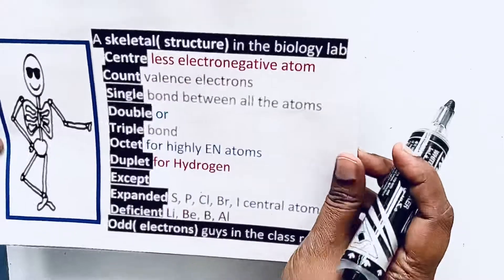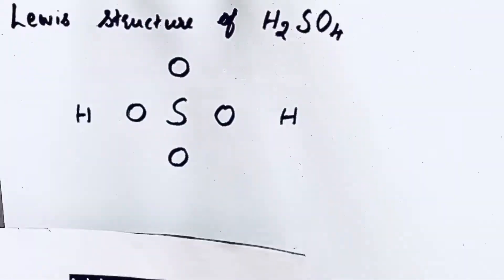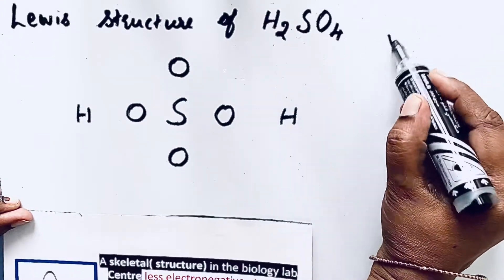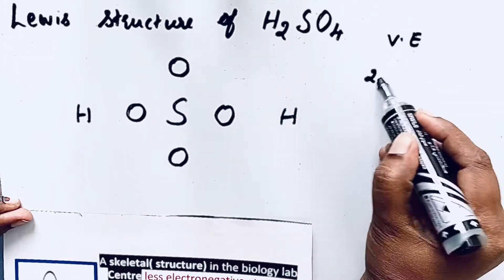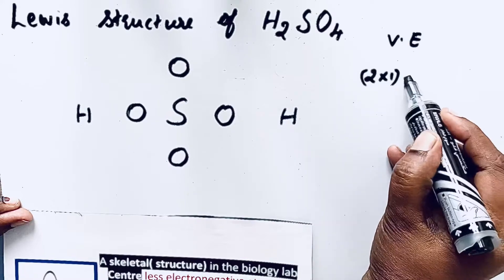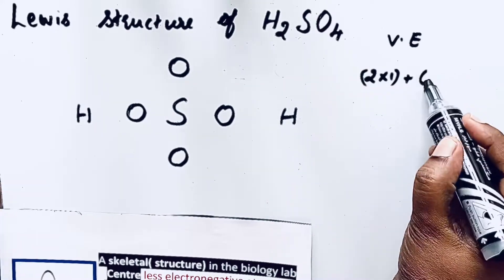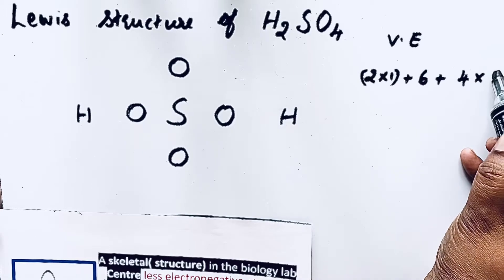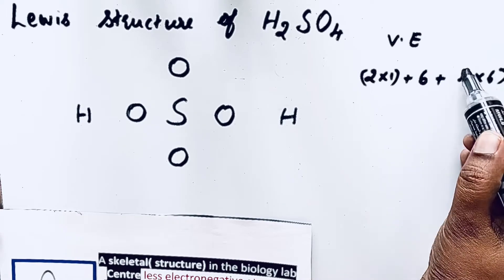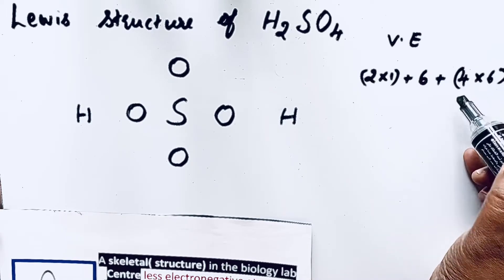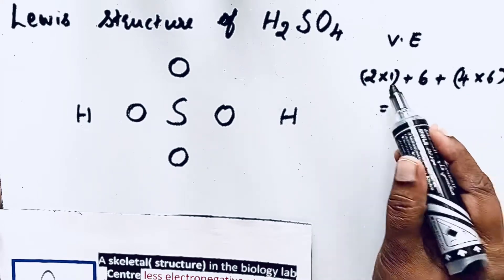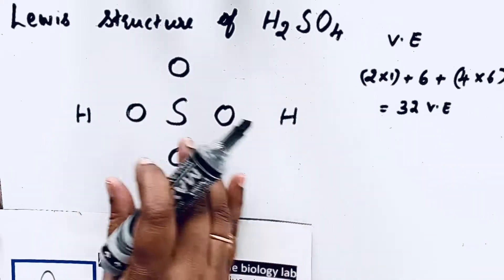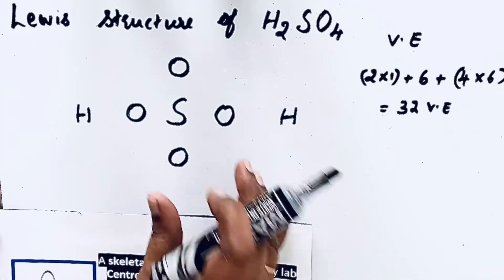Now come to the third step: count valence electrons. We are going to count total valence electrons. How many hydrogen atoms are here? Two hydrogen atoms, so valence electron one. Sulfur valence electron six. Four oxygen atoms, so four times the valence electron of oxygen, also six. If you add all together we will get 32 valence electrons. Total 32 valence electrons are present in this compound.